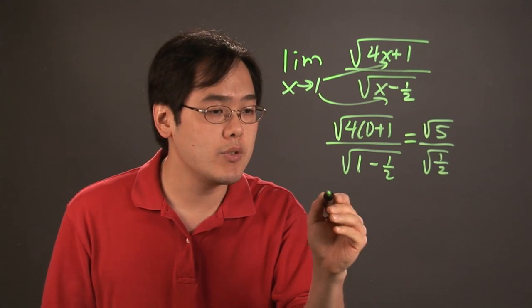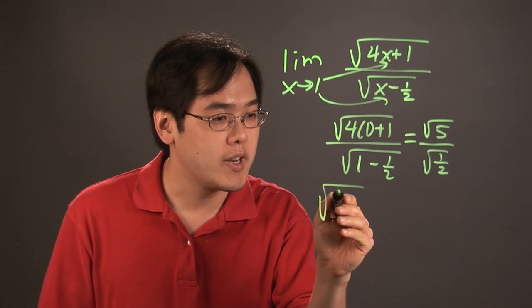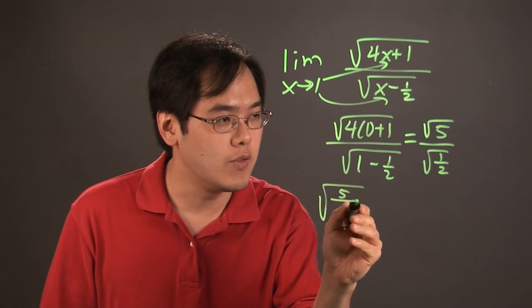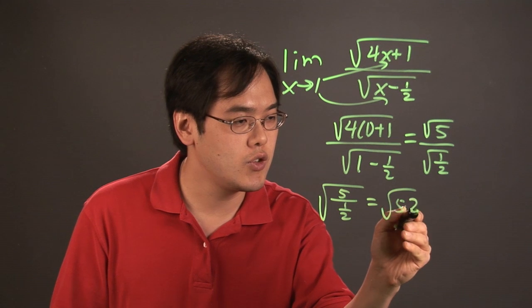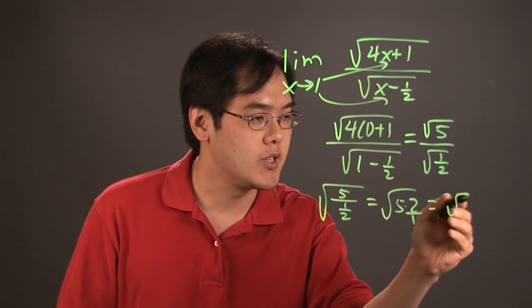Now at this point because they're both square roots you can write it as one radical so you have 5 over 1 half and 5 divided by half is like saying 5 times 2 over 1 so that's going to be the square root of 10.